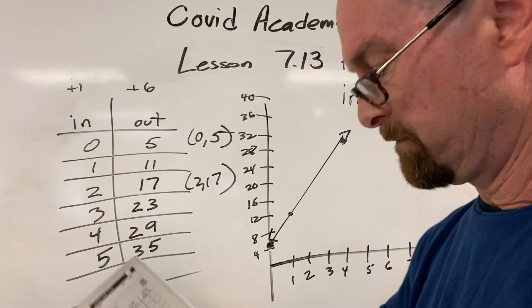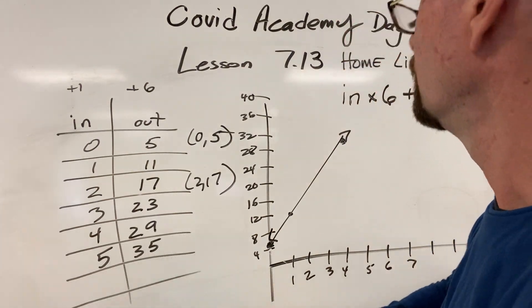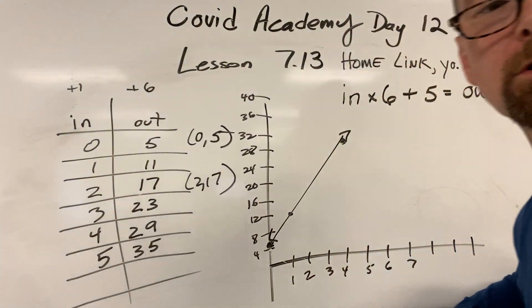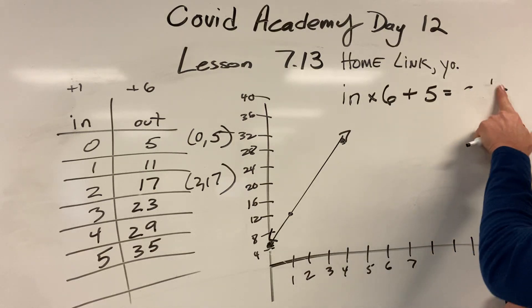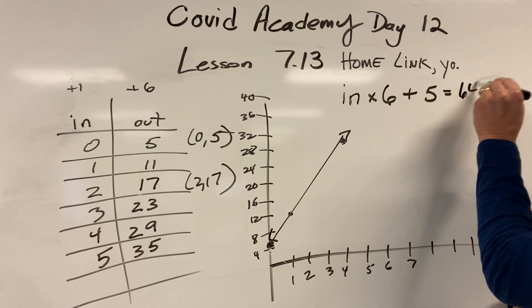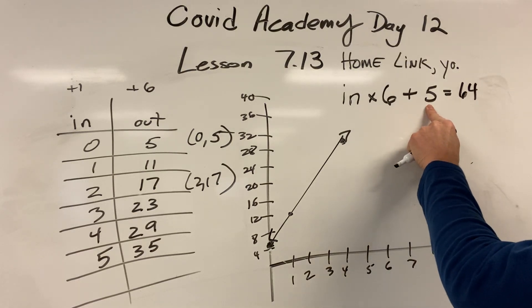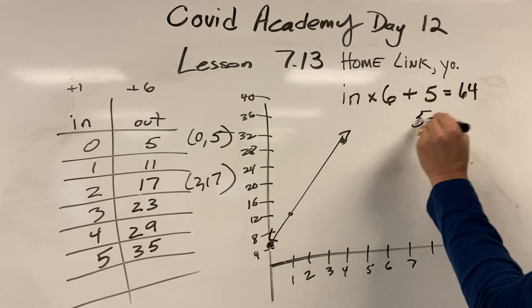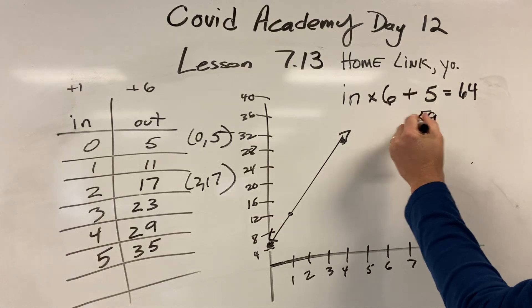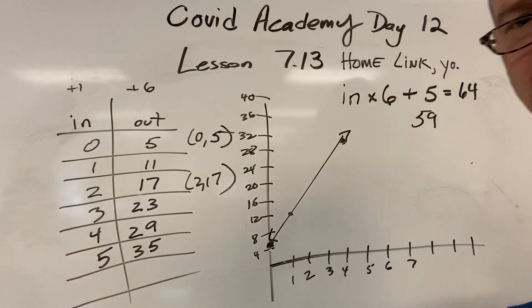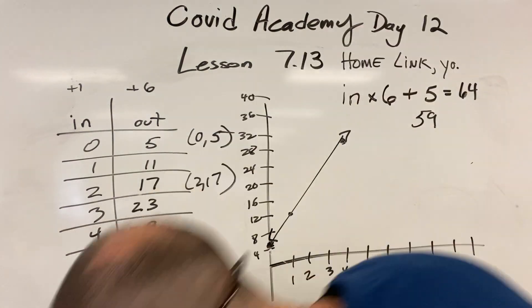53. When Y is 64, more challenging. So if this is 64, I take 5 away from it, I get 59. What times 6 is 59?